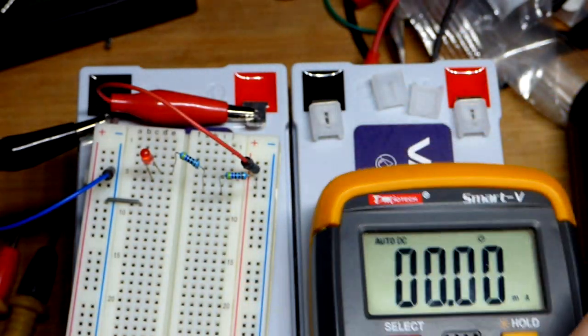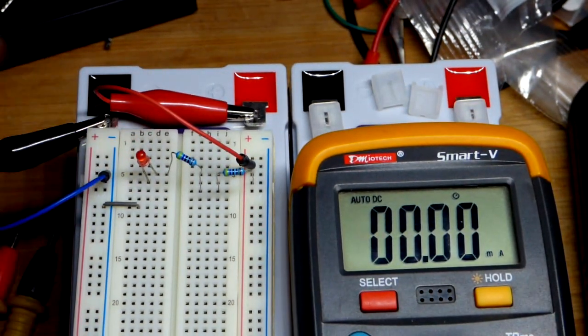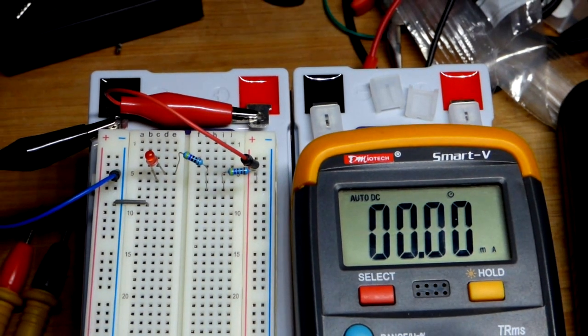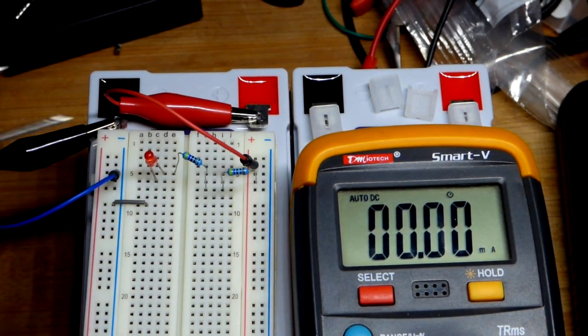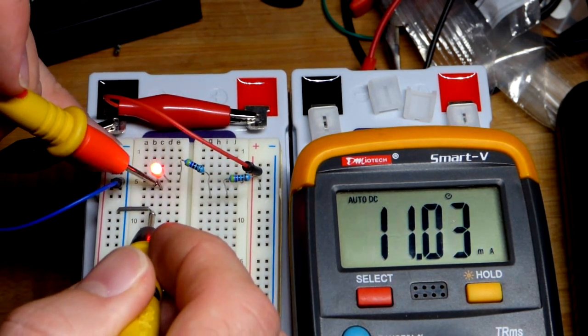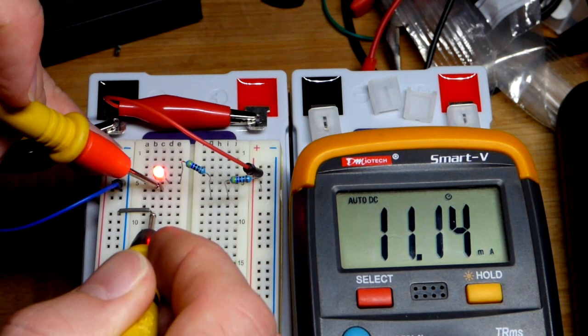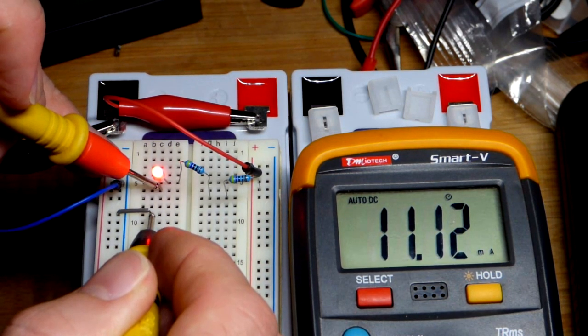And now we will set the multimeter to measure milliamps of current. Also since we're using a battery here, it's a good idea to turn off your load whenever you're not using it. And so in any case we have it open now, we can measure the current going through here. And you can see we got about 11 milliamps of current.